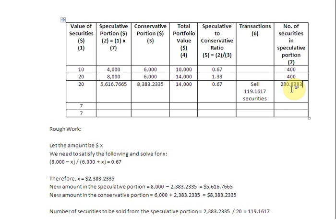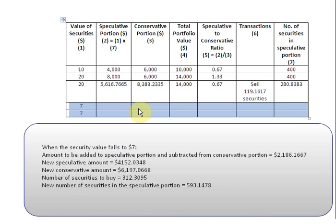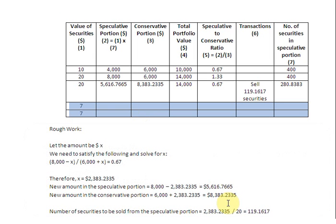I hope this was helpful. As your homework, try filling out the next two rows of the table when the value of the security falls to $7. The answers for rebalancing at $7 are: add $186.1667 to the speculative portion and subtract from the conservative portion, giving a new speculative amount of $4,152.0348 and a new conservative amount of $6,197.0668, with 312.3095 securities bought. See you in the final episode of this series. Bye-bye.